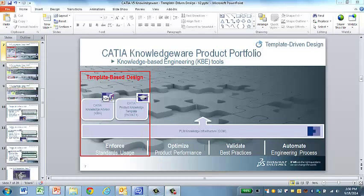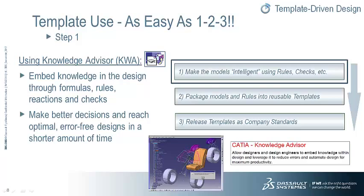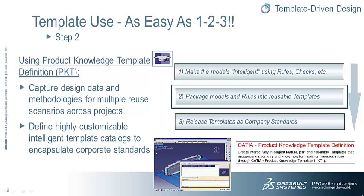We're going to now focus on the Enforce column, which includes the CATIA KnowledgeWare products for template-driven design. Using CATIA KnowledgeWare templates is as easy as 1-2-3. First, we use Knowledge Advisor, or KWA, to embed knowledge in the design through formulas, rules, reactions, and checks. This is very simple to do and will allow your organization to make better decisions and reach optimal, error-free designs in a shorter amount of time. That's step one. Now it's time to create the templates through the use of CATIA Product Knowledge Template Definition, or PKT.